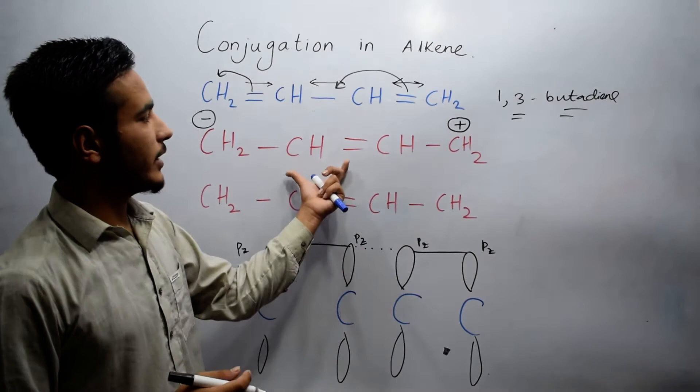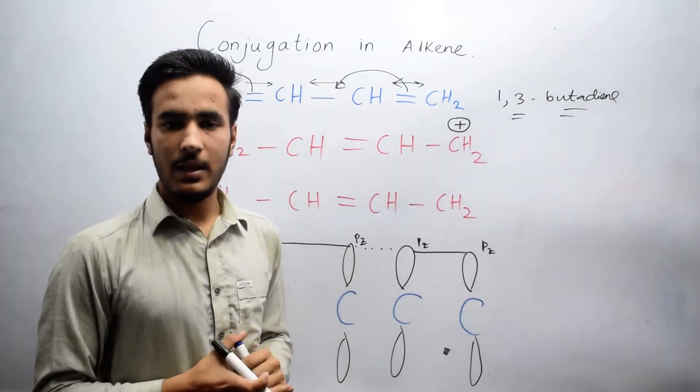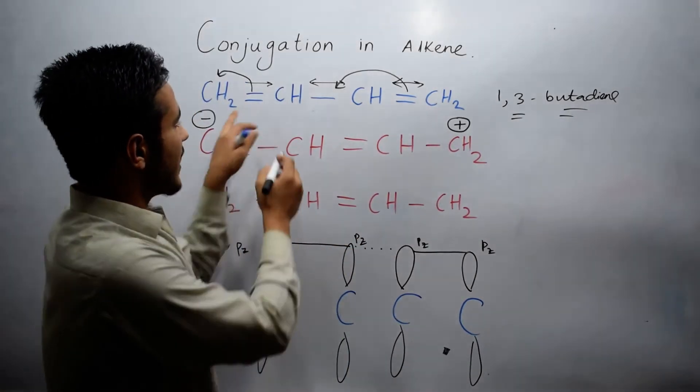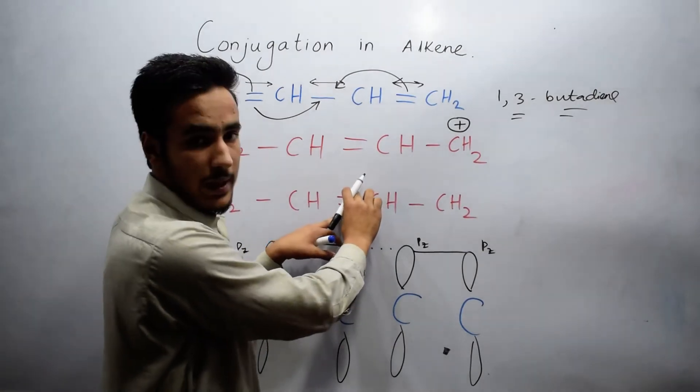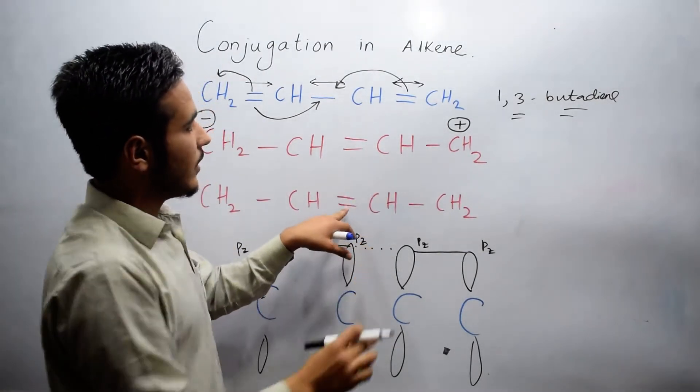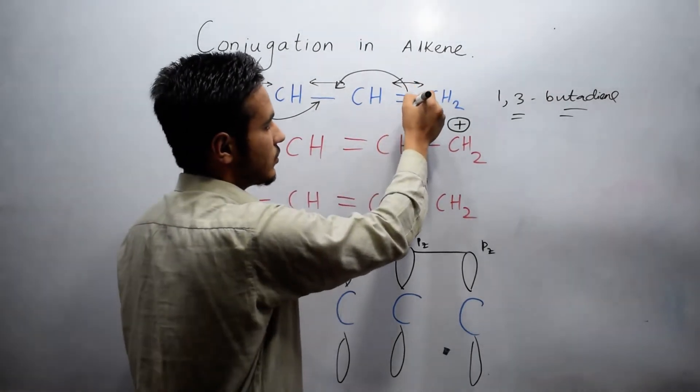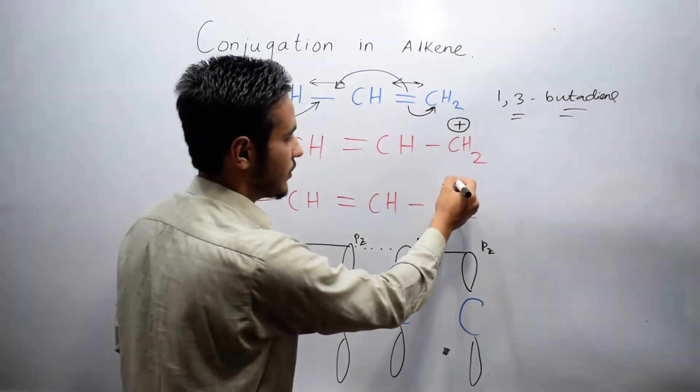We can get conjugated compounds from 1,3-butadiene. In another case, if this bond breaks here, we will get a double bond. If this bond breaks on CH2, we will get a negative charge here.